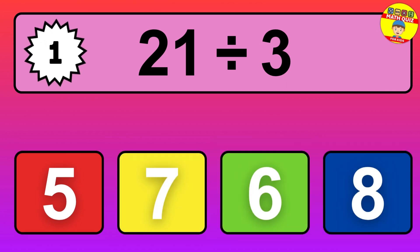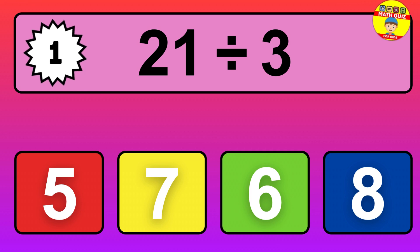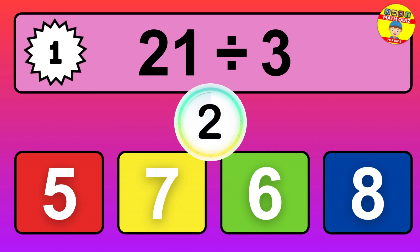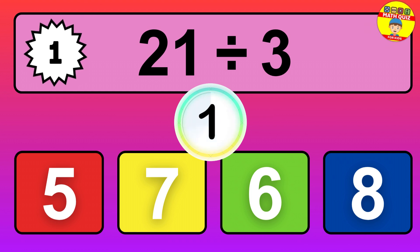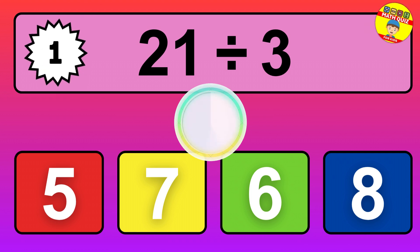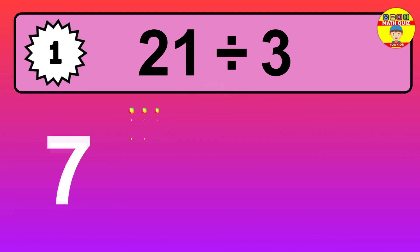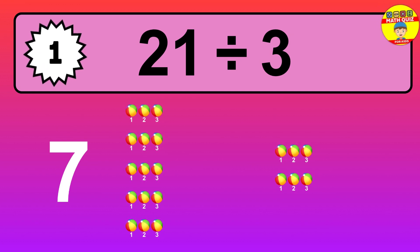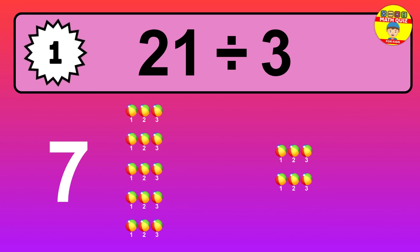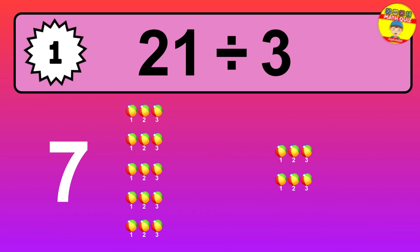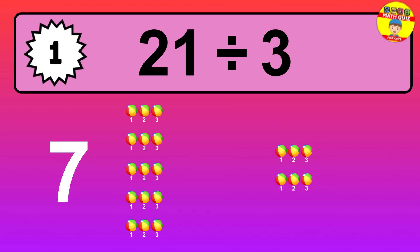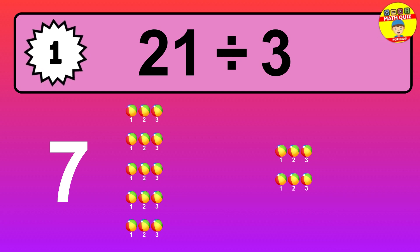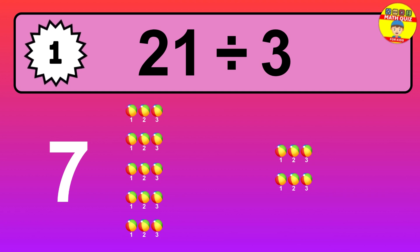21 divided by 3 is... time to think. Let's go to the solution. Divide the number 21 by 3. Each group contains 3 units, so dividing 21 by 3 results in 7 equal groups. Thus, the result is: 21 divided by 3 equals 7.